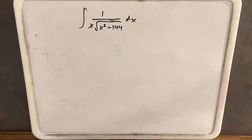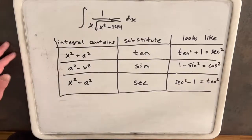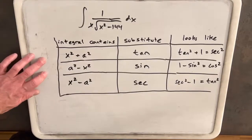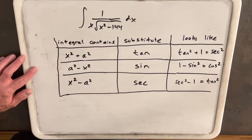We have on the board the integral of 1 over x squared x minus 144 dx. I created this table as a general guideline for which trig substitution you'd probably like to try to use in each case based on your integral.